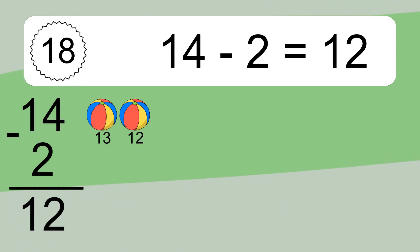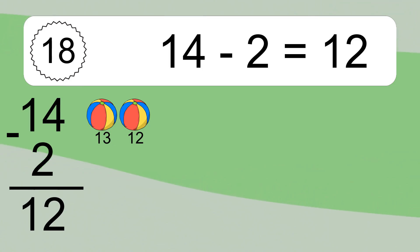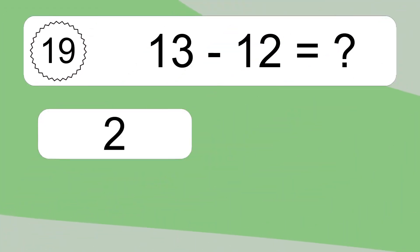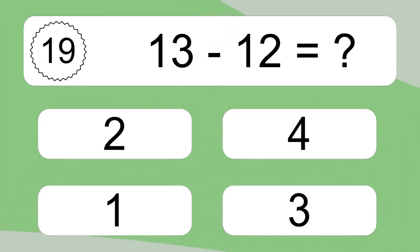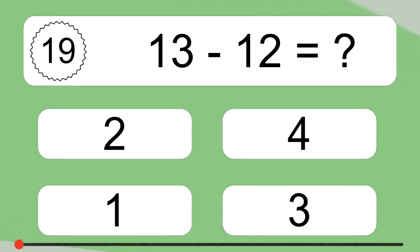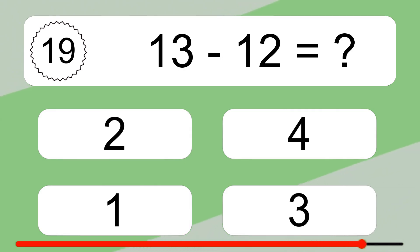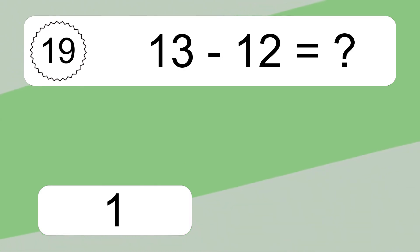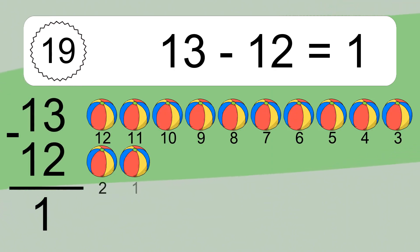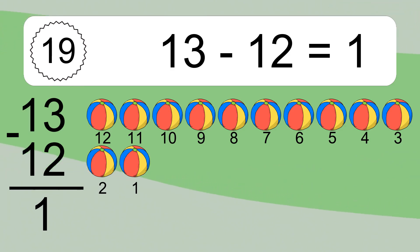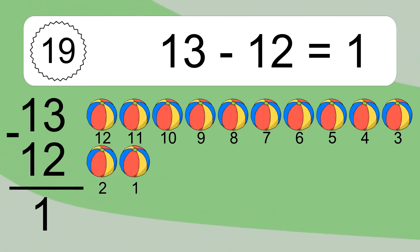13 minus 12 equals what? 13 minus 12 equals 1. Let's count it: 12, 11, 10, 9, 8, 7, 6, 5, 4, 3, 2, 1.